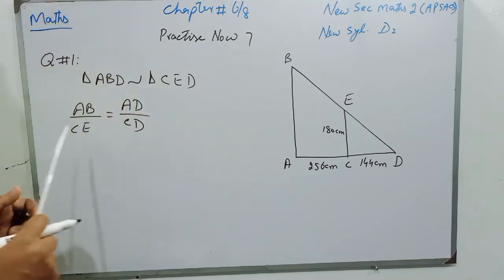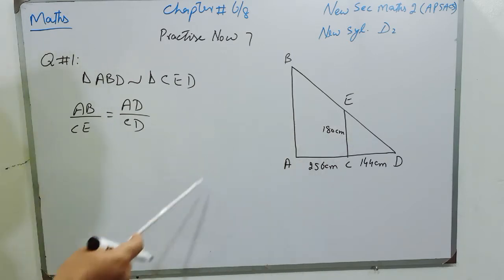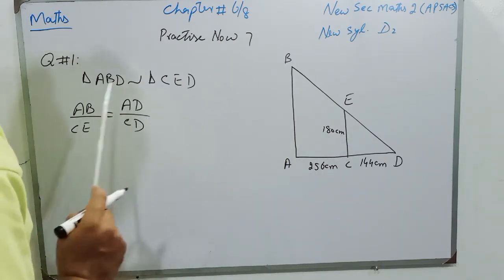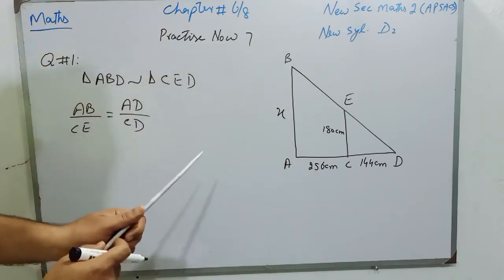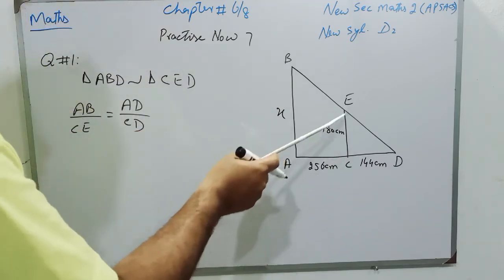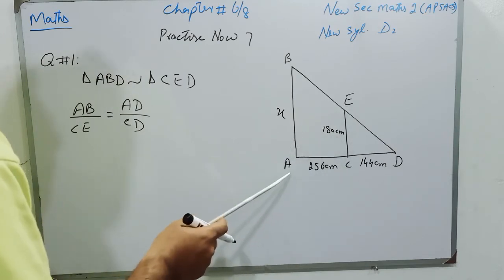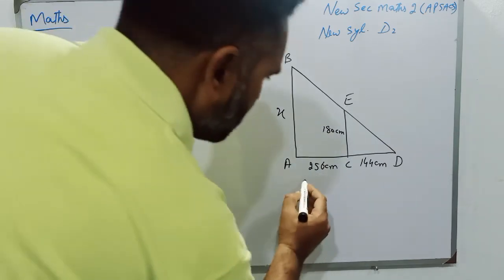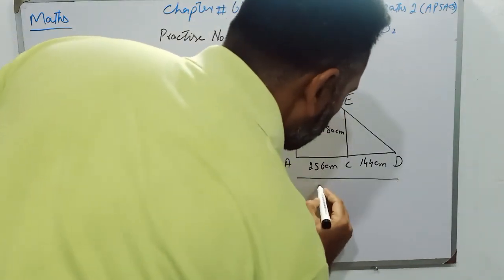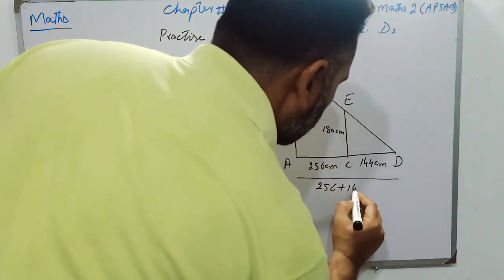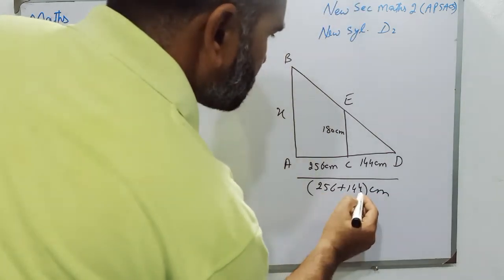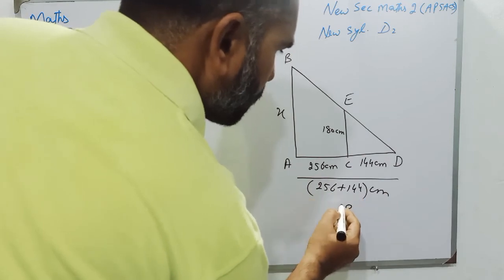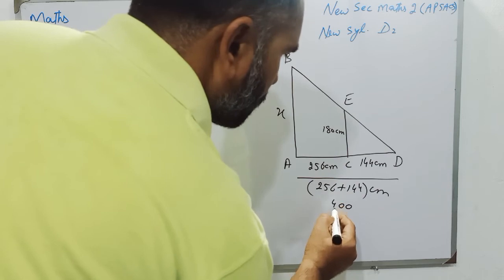AB over CE will be equal to AD over CD, as the corresponding sides of similar triangles are proportional. We suppose that the height of AB is X, and the length of CE is 180. Whereas AD will be 256 plus 144 cm, which becomes 400 cm.